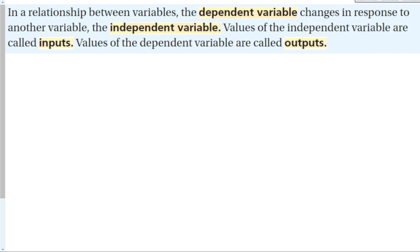In a relationship between variables, we have vocabulary words to describe them. The dependent variable changes in response to another variable, called the independent variable. Independent variables are your inputs; values of dependent variables are called your outputs. The independent variable is your x-coordinate, and the dependent variable is your y-coordinate, or f(x) in function notation. We'll stick with x and y for now.